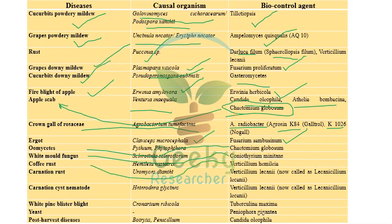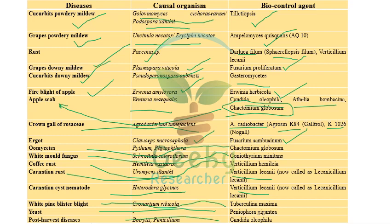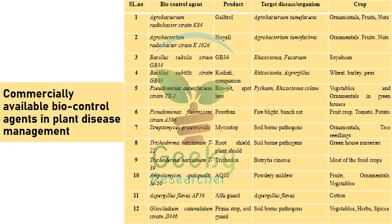For coffee rust caused by Hemileia vastatrix, the specific biocontrol agent recommended is Verticillium hemileiae. For carnation rust caused by Uromyces dianthi, Verticillium lecanii is recommended. For carnation cyst nematode Heterodera glycines, Verticillium lecanii is also recommended. For white pine blister rust caused by Cronartium ribicola, Tubercularia maxima is recommended. For post-harvest diseases, Candida oleophila is recommended.